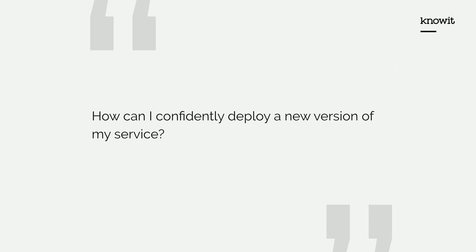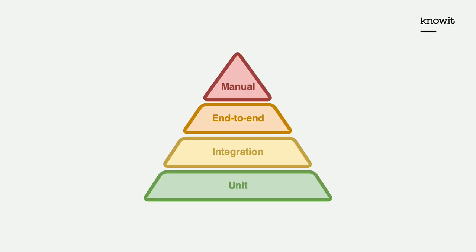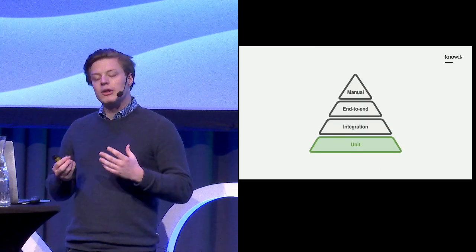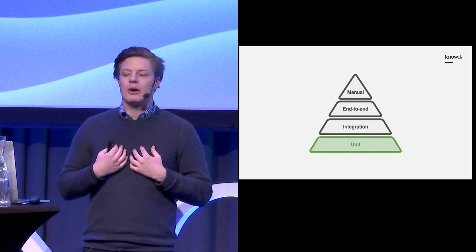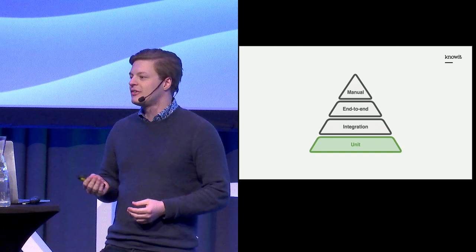I first started thinking about this when I started working as a junior developer three years ago. In 2015, I was hired as a consultant to work on an old monolithic application. Every time I made code changes, I could run a whole suite of tests, which gave me assurance that I had not broken any of the internal functionality. But we were also starting to provide an increasing amount of external REST APIs, and I could never be certain that I had not broken any of the external applications depending on this monolith.